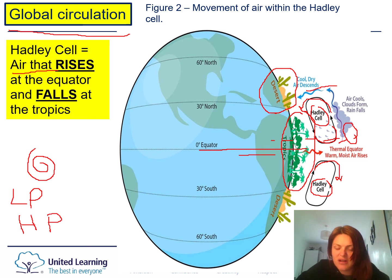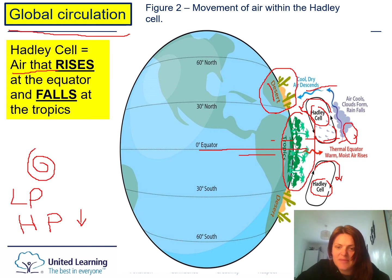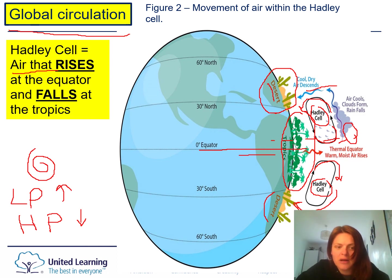Just north of the rainforest we've got deserts. Looking at the Hadley cell, the air there is moving down. If the air is going down it can't be evaporating any moisture — therefore the air has to be dry. We call this high pressure, HP. When the air goes down it brings dry weather. The same happens south of the equator too — air goes down, high pressure, dry weather. All you need to remember: low pressure, air rising, wet; high pressure, air descending, dry.